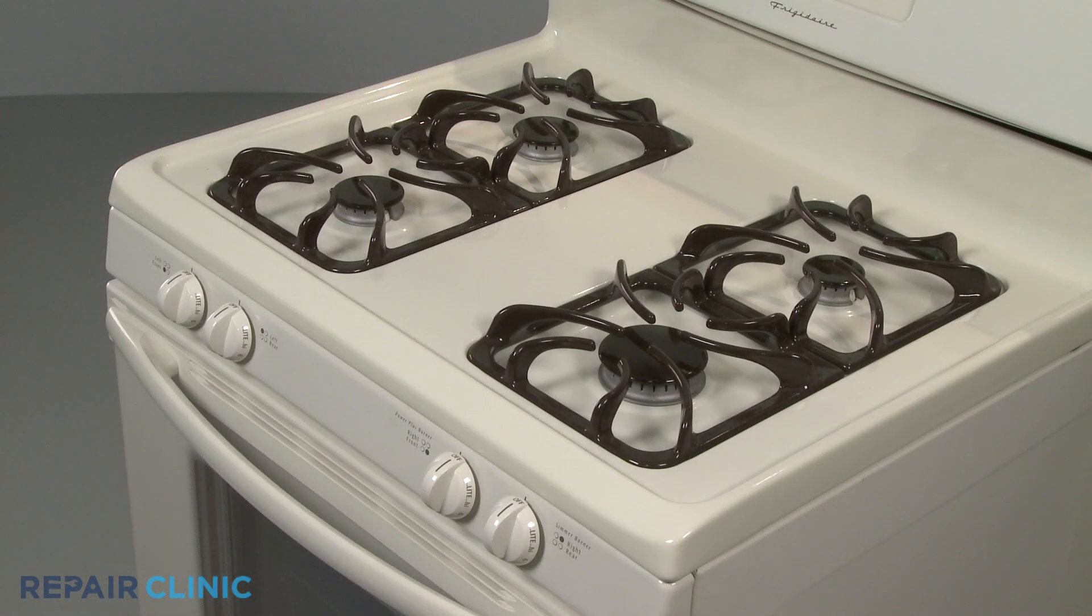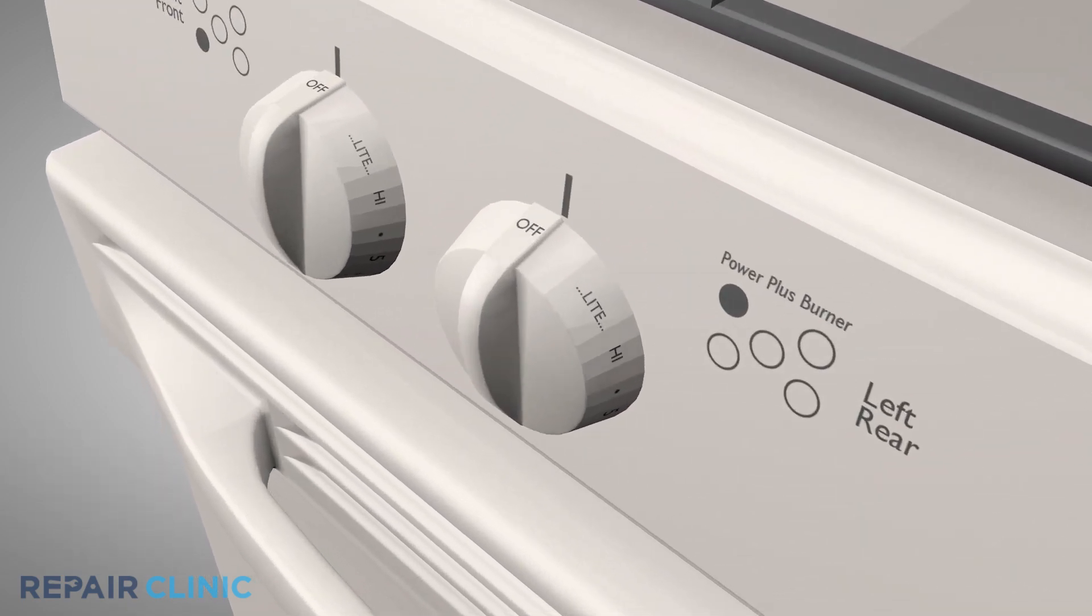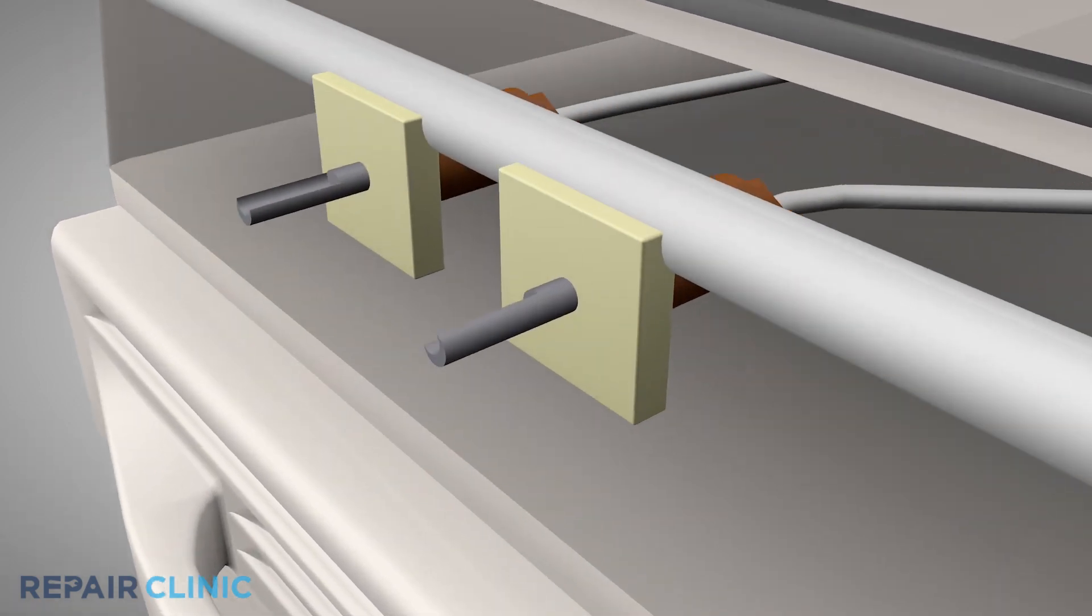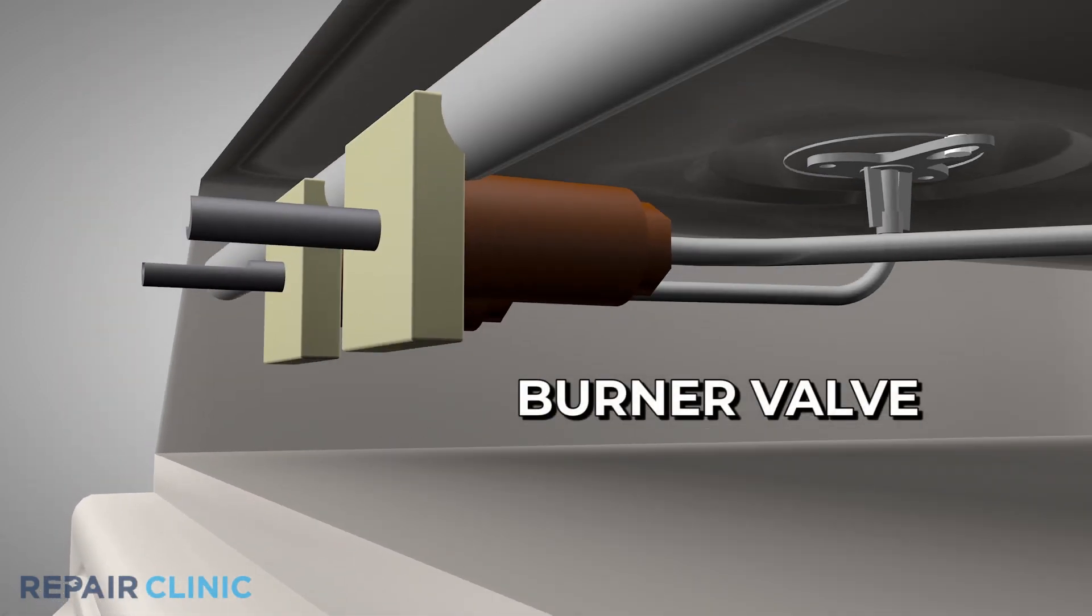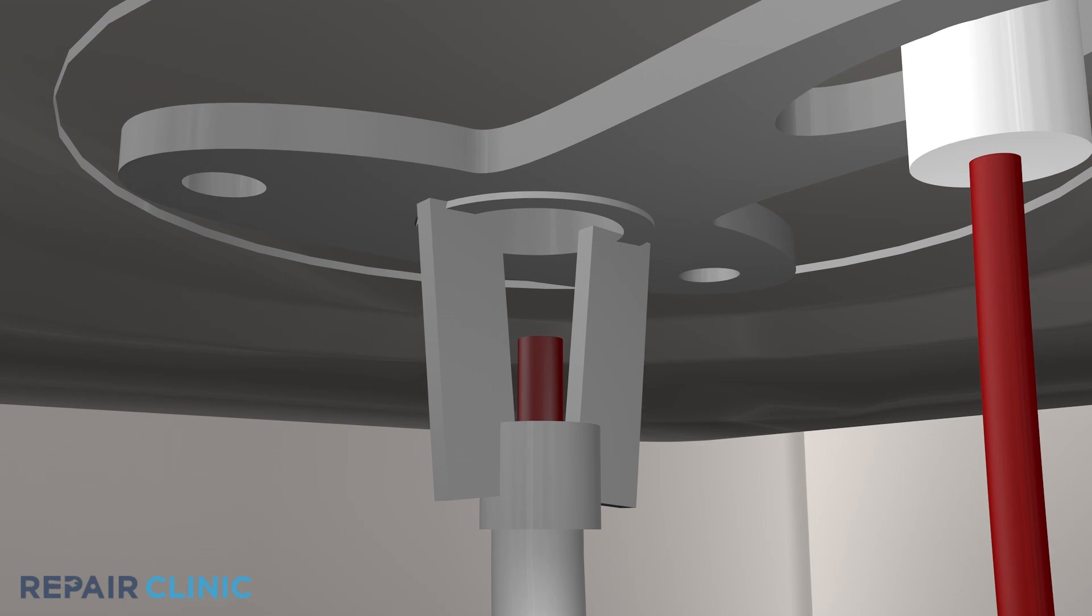Each surface burner knob on the stovetop controls a burner valve. When the knob is turned to the light position, the valve opens, allowing gas to flow from the manifold. As the gas travels through the burner tube, it is directed into the venturi, where it combines with air to create the proper mixture necessary for combustion.